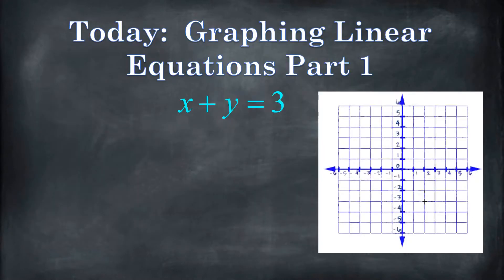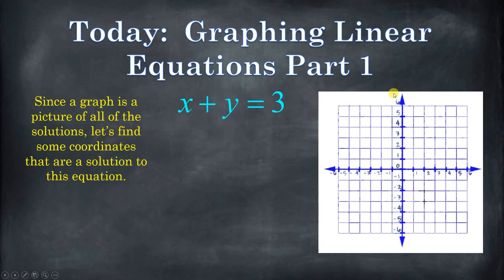So let's go ahead and see how to graph something like this. Since a graph is a picture of all the solutions, and we want to graph x plus y equals 3, what we need to do is we need to find some solutions. So what about if x equals 1 and y equals 2? Like this right here, 1 comma 2. You know how I got that? Well, I just thought about it.